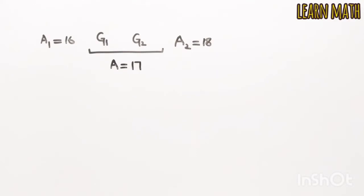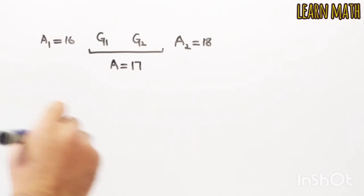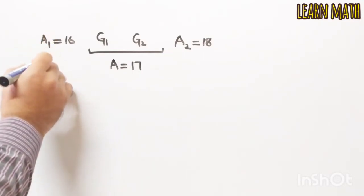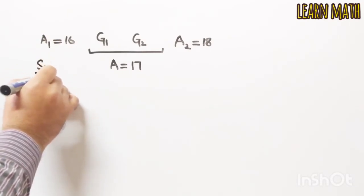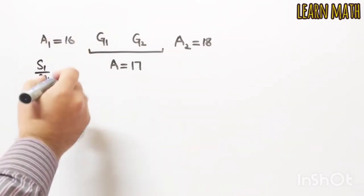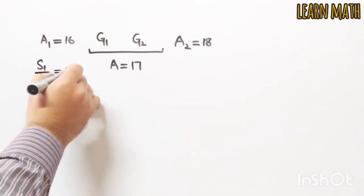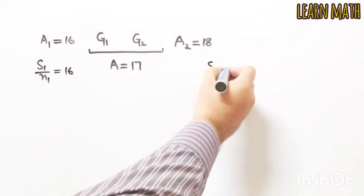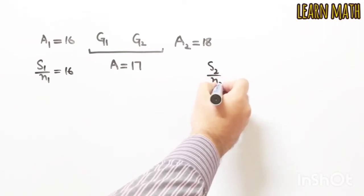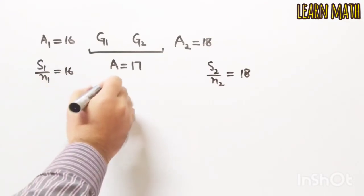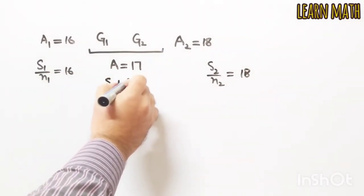Now we know that the average is the sum of all students' ages in a group divided by the number of students. So we can write: a1 = s1 / n1, where s1 denotes the sum of all students' ages in group 1, divided by the number of students in group 1, which equals 16. We can write s2 / n2 = 18. Also, the average of the whole class: (s1 + s2) / (n1 + n2) = 17.